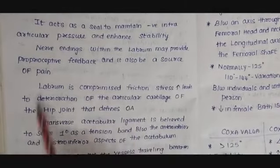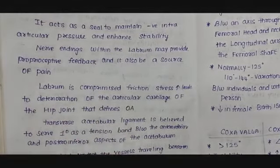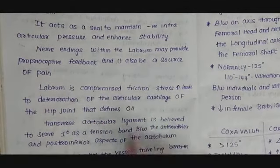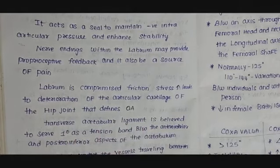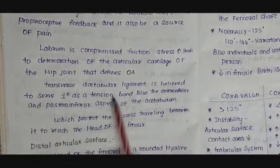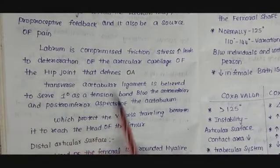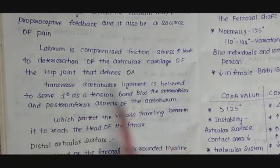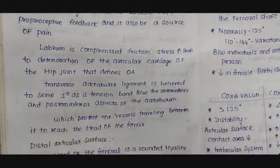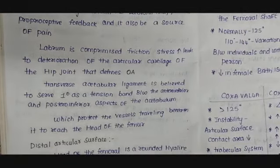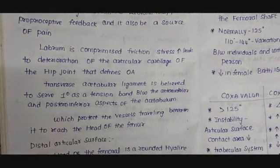The labrum is very important. If it gets injured, that may increase friction stress, leading to deterioration of the articular cartilage and resulting in osteoarthritis. The transverse acetabular ligament is believed to serve as a tension band between the anteroinferior and posteroinferior aspect of the acetabulum, protecting the vessels traveling underneath it to reach the acetabular fossa. Previously it was thought the transverse acetabular ligament was a continuation of the labrum, but there is no experimental data to prove this.